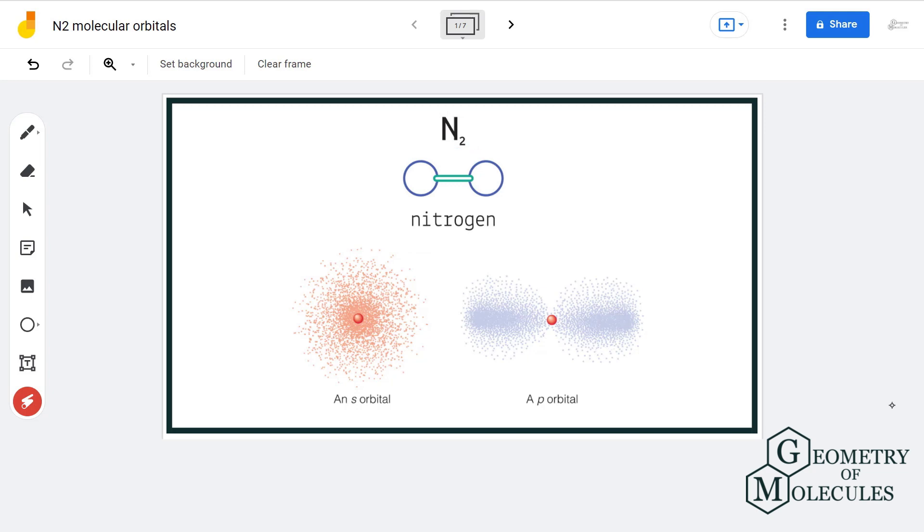In last few videos we saw what atomic orbitals are with some examples. When we talk about orbitals, we should keep in mind that they are not something physical. They are just spaces or regions where the probability of finding electrons is high.